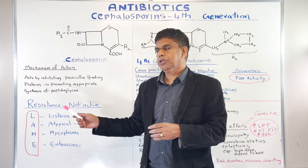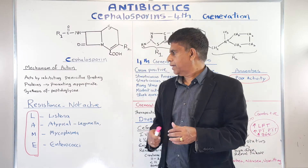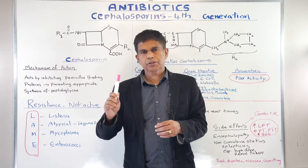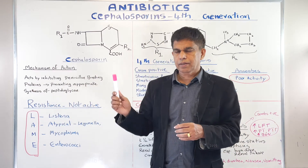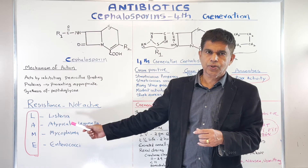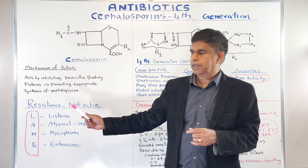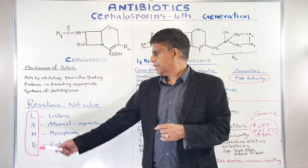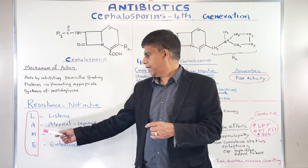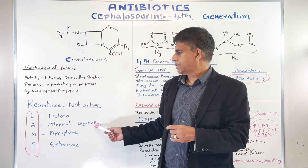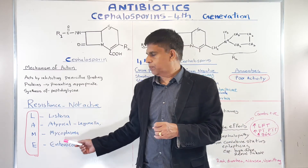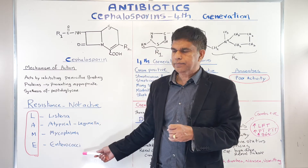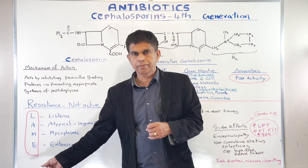Now, remember a mnemonic about resistance — some of these drugs will not work against certain organisms. The mnemonic is LANE: L is Listeria, A is Atypicals (for example, Legionella), M is Mycoplasma, and E is Enterococci. Remember the mnemonic LANE.